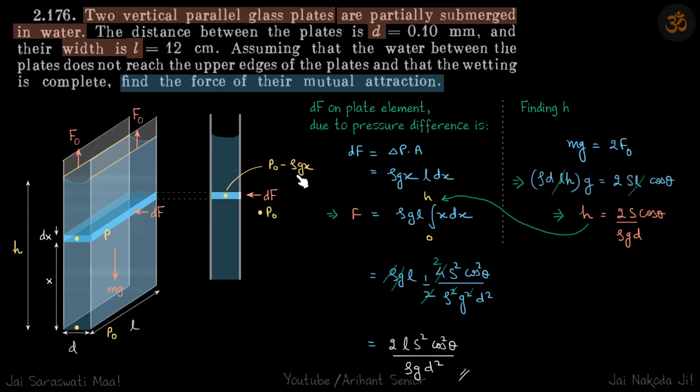You can see delta P will have a negative sign, which means that inside pressure is less than outside pressure. That's why there will be a force of attraction. Now you can imagine that instead of water, if it were mercury, then the level of mercury will be below this P naught.